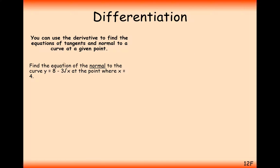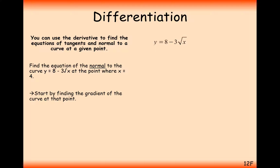Here is a normal question. Find the equation of the normal to the curve y equals 8 minus 3 root x at the point where x equals 4. We're going to start by finding the gradient of this function. Once we've found the gradient, we're going to find the perpendicular by following the rule of the two gradients multiplying to make minus 1.